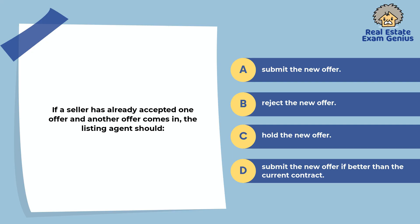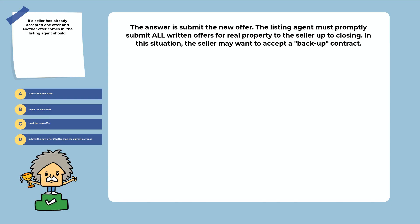If a seller has already accepted one offer and another offer comes in, the listing agent should: submit the new offer, reject the new offer, hold the new offer, or submit the new offer if better than the current contract. The answer is to submit the new offer. The listing agent must promptly submit all written offers for real property to the seller up to closing. In this situation, the seller may want to accept a backup contract.